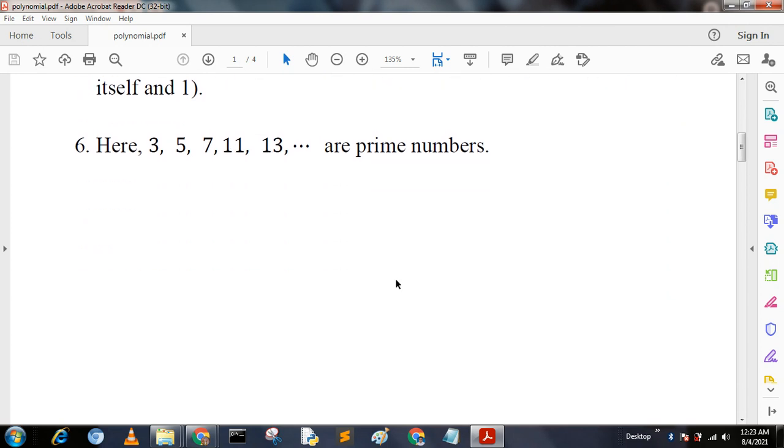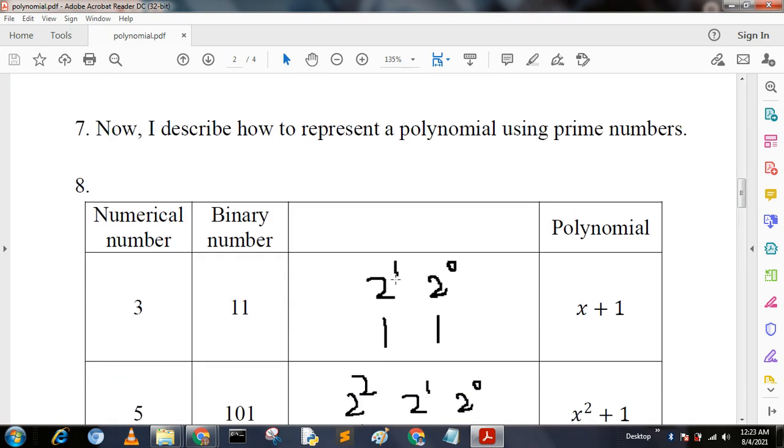Now I describe how to represent a polynomial using prime numbers. Here, numerical number 3 is a prime number whose binary representation is 11. That is, we can write it as 2^0 + 2^1, which equals 1 + 1.